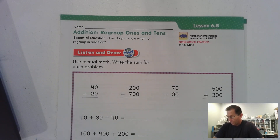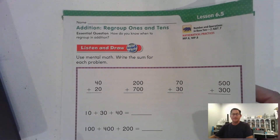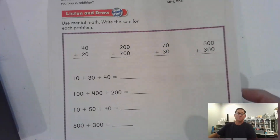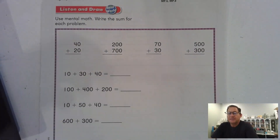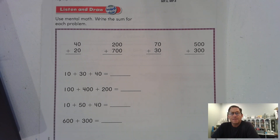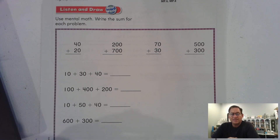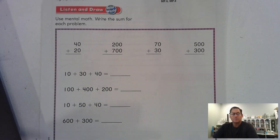In the following lesson, draw, use mental math and write the sum for each problem. What I want you to do is try to complete these problems as quickly as you can, because basically these are problems that we should be able to do in our head mentally and quickly, because we're basically just dealing with math facts. So go ahead and pause the video and see how quickly you can complete this page.